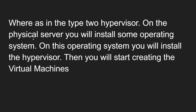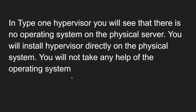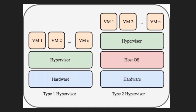In the Type 2 hypervisor, on the physical server you first install an operating system — just like our desktop systems. So the physical hardware has an operating system installed on it, then you install the hypervisor on top of that operating system, and then you start creating virtual machines. This hypervisor needs a host operating system such as Windows, Linux, or Mac. This is called a Type 2 or software hypervisor.